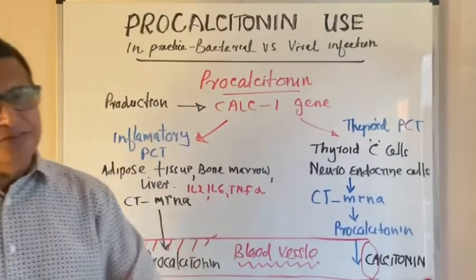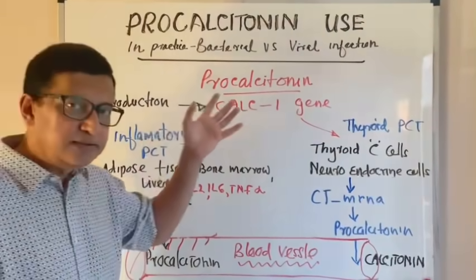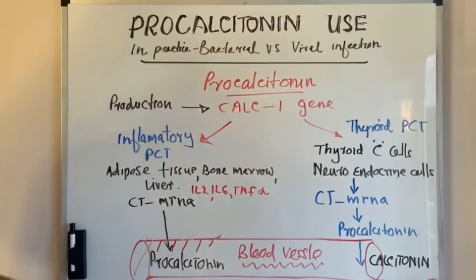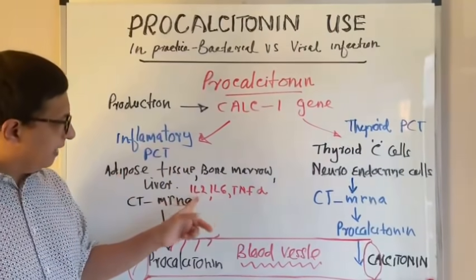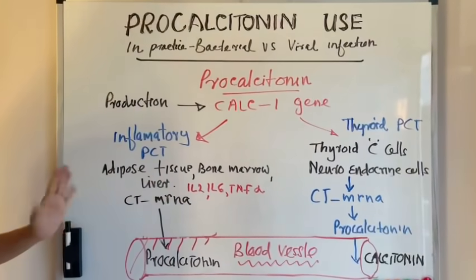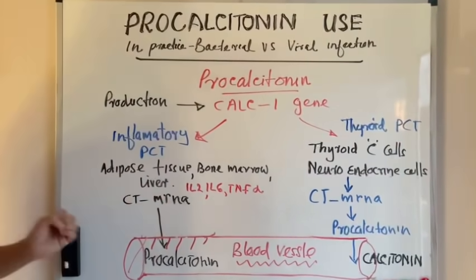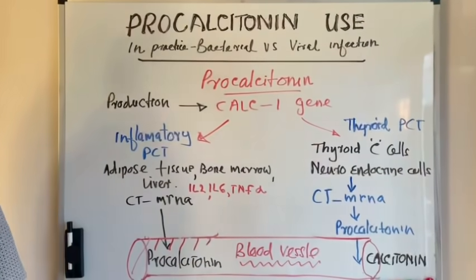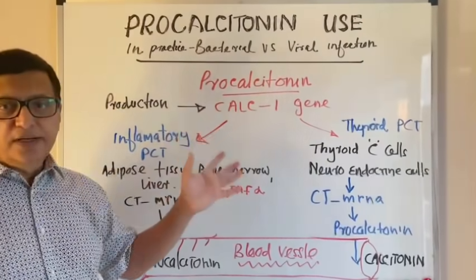When there is inflammation, especially a bacterial infection, the inflammatory PCT production pathway occurs. Procalcitonin is produced by adipose tissue, bone marrow, and liver through the effect of inflammatory mediators — interleukin-2, interleukin-6, and TNF-alpha. Calcitonin mRNA is released from the nucleus, procalcitonin is produced in the cytoplasm, and this procalcitonin is released straight away into the bloodstream.